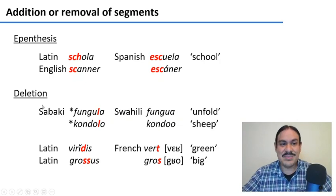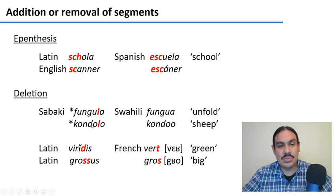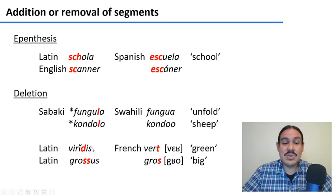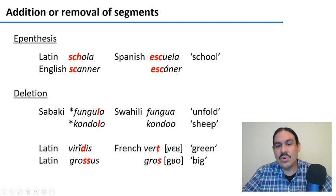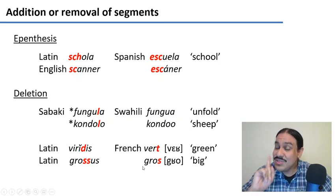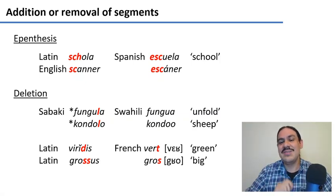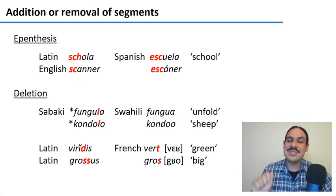Deletion means that you delete a segment. In Sabaki, the mother language of Swahili, we have the words 'fungula' and 'kondolo' (unfold and sheep), which have become 'fungua' and 'kondoo' in modern Swahili — the L was deleted over time. This also happened in French. In Latin, we have 'viridis' and 'grossus' for green and big. The D and S were lost at the end of the word, so modern French has 'vert' and 'gros'. The consonant is preserved only when it's not the final sound, like in 'verte' and 'grosse', the feminine forms.